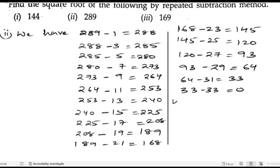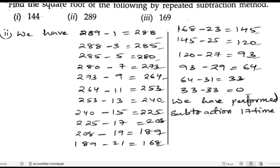So we have performed how many? We have performed subtraction how many times? Let us see: 1, 2, 3, 4, 5, 6, 7, 8, 9, 10, 11, 12, 13, 14, 15, 16, 17. 17 times. Hence, square root of 289 is 17.